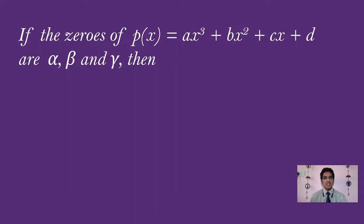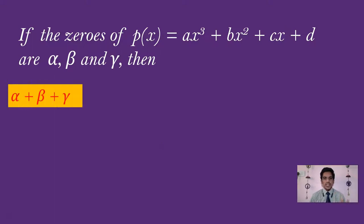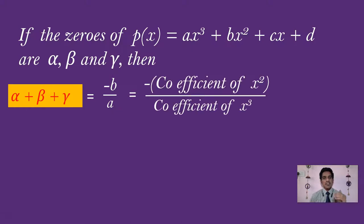Now, have a look at this. If the zeros of P(x) = Ax³ + Bx² + Cx + D are alpha, beta, and gamma, then we have three relations. The first one: alpha plus beta plus gamma — that is the sum of zeros — is given by minus B by A, where B is the coefficient of x² and A is the coefficient of x³.